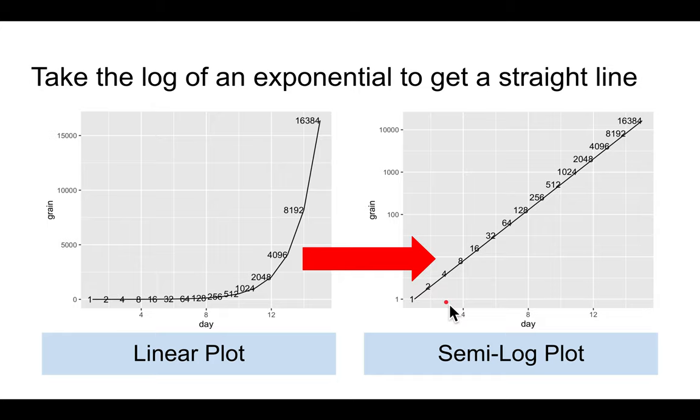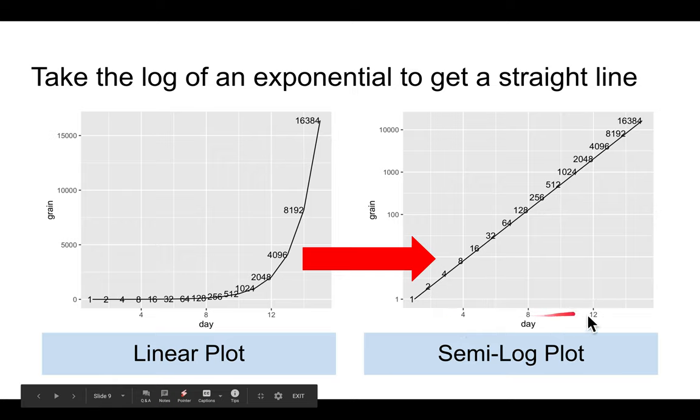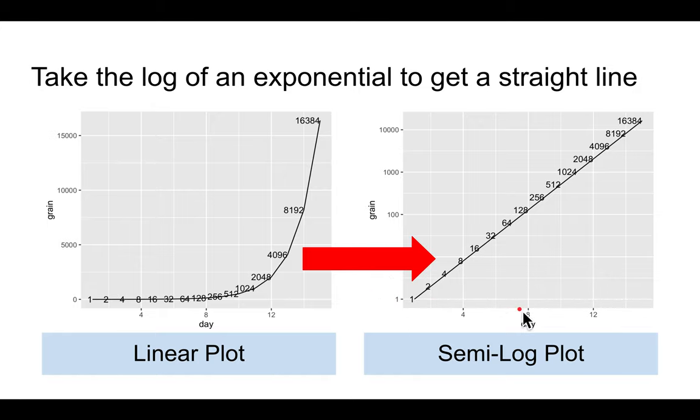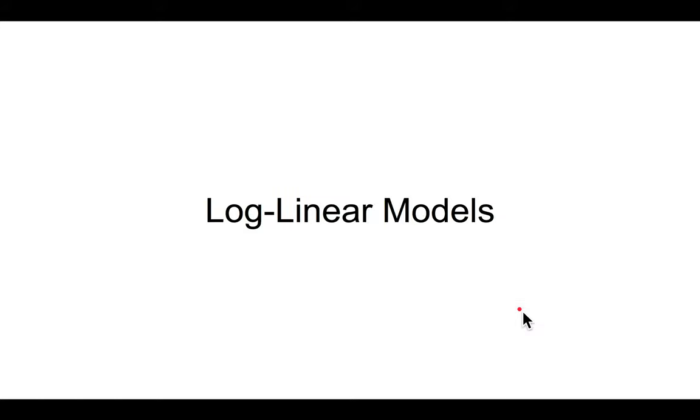If you take the log of the number of grains, then you can transform the exponential growth into a straight line. So this is known as a set, the graph on the right is known as a semi-log plot, because the y-axis is on a log scale, whereas the x-axis isn't on the regular linear scale. So that's why it's called semi-log. If both axes are on the log, both are on log scales, you'll call it a log log plot.